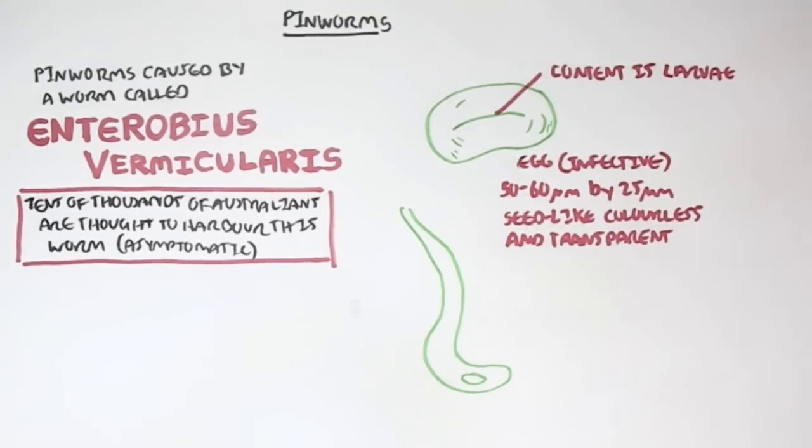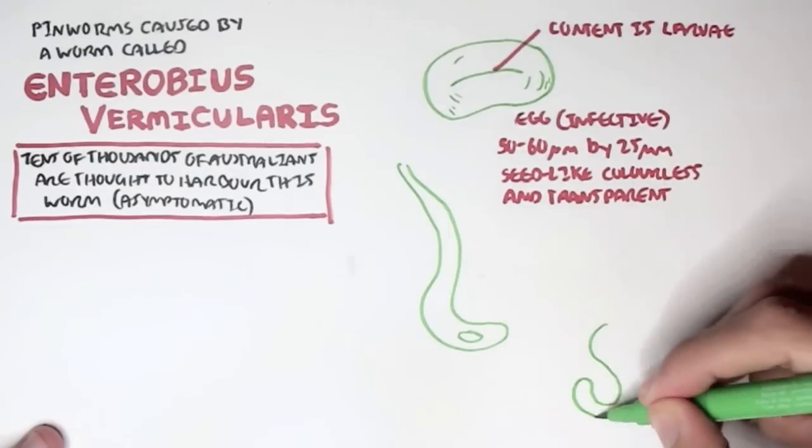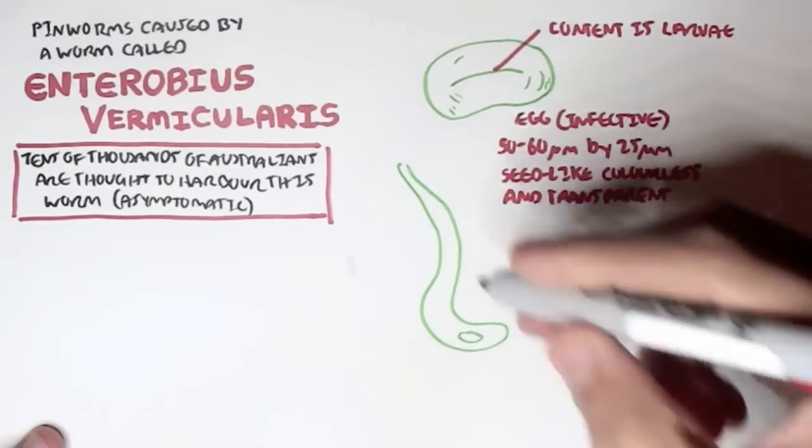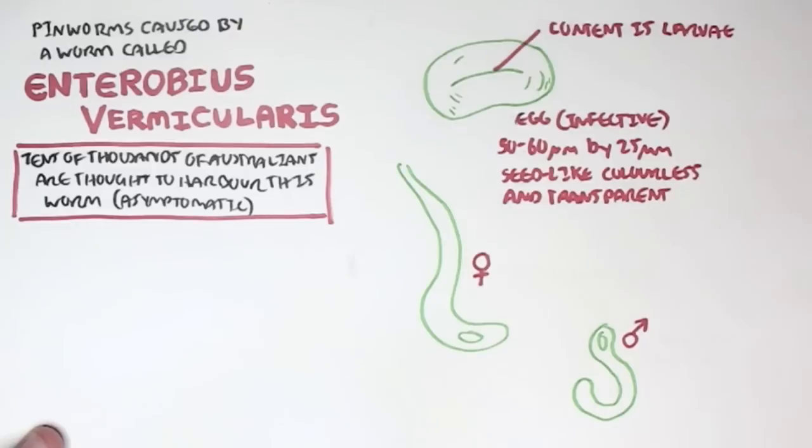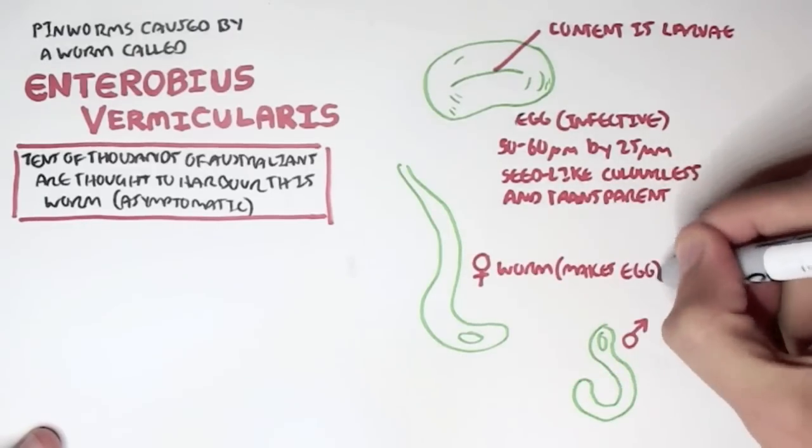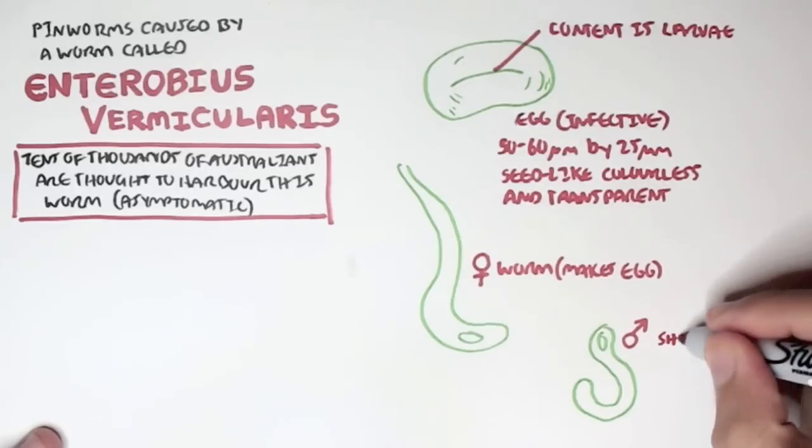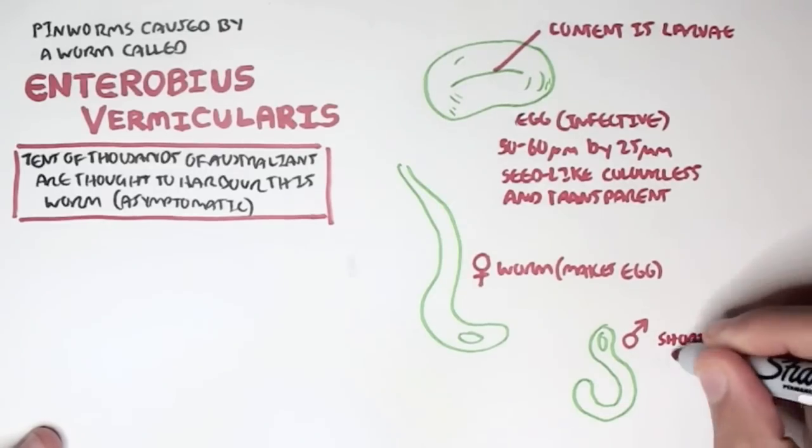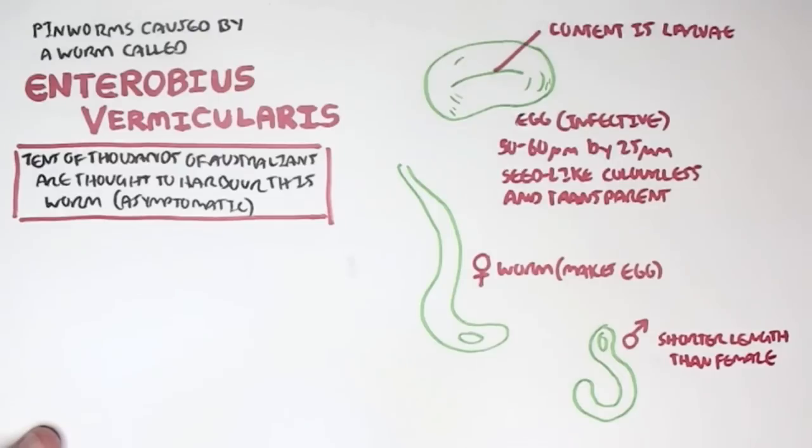When the egg or the larva becomes worm, the worm can be either female or male. A female worm makes more eggs. A male worm is a lot shorter than the female and helps the female in mating to produce more eggs.